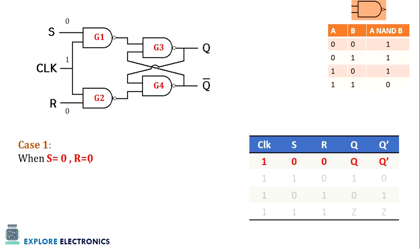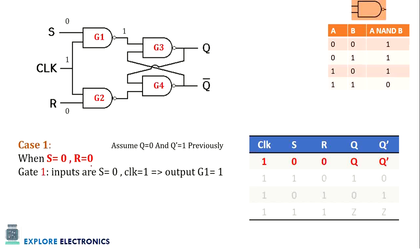Case 1: S is 0 and R is 0. If we provide 0 and 0, the clock will be 1 since we are operating this flip-flop at the positive edge of the clock. We also assume previous state: Q is 0 and Q bar is 1, since it is a sequential circuit and output depends on previous outputs. Gate 1 takes S=0 and clock=1, producing output 1. Gate 2 takes R=0 and clock=1, also producing output 1.